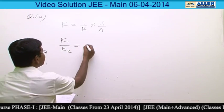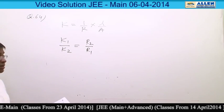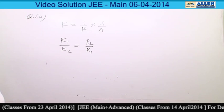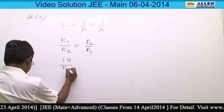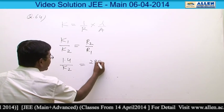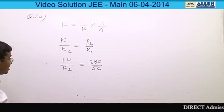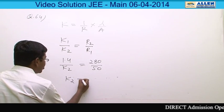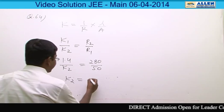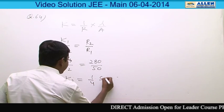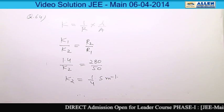Because cell constant will be same in the same conductivity cell. So from the data, 1.4 upon K2 is equal to 280 by 50. From the data and resistance given, we can calculate the second case and that value comes up 1 by 4 siemens per meter.